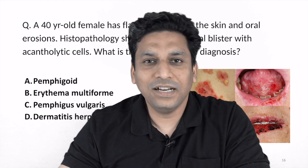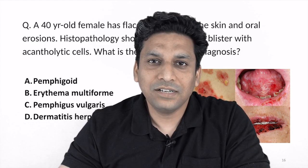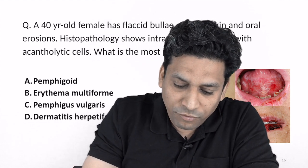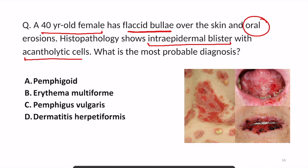Hello students, welcome back. This question was asked in one of the exams: a 40-year-old female has flaccid blisters over skin and oral erosion — buccal mucosa is also involved. On histopathology, intraepidermal blisters were seen with acantholytic cells. What is the most probable diagnosis?